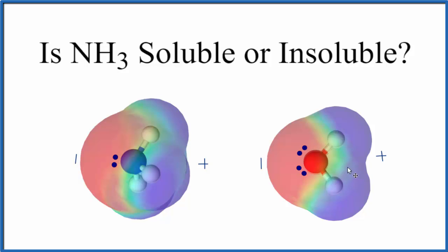So again, here we have a negative pole and a positive pole. They're attracted, and that attraction makes it easier for the ammonia to dissolve in water.